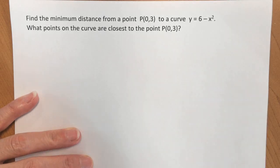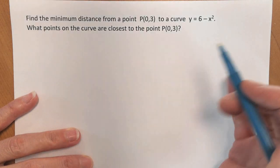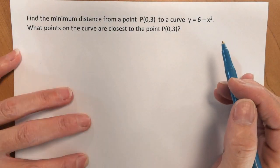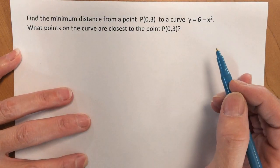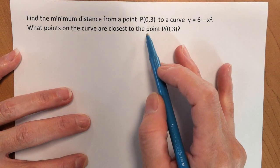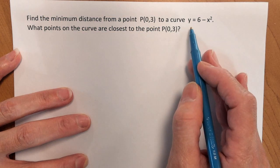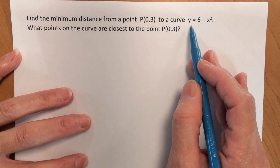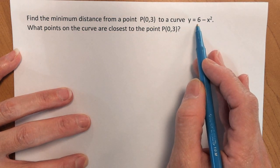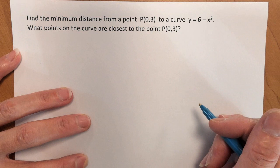In this video, we are going to optimize the distance from a point to a curve. We're going to find the minimum distance from a point (0, 3) to a curve y equals 6 minus x squared.